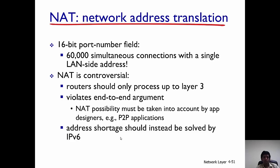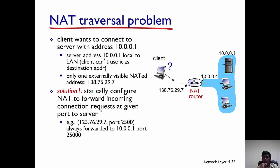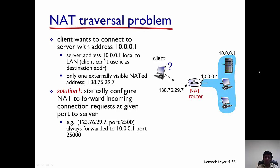Another question with NAT: how does a client outside a network connect to a server behind a NAT? The external client cannot connect to 10.0.0.1 because that's a local IP address. It can only connect to the NAT IP address 138.76.29.7, but that only reaches the NAT router. One possible solution is to statically configure the NAT to forward incoming requests on a given port to the specific internal server.